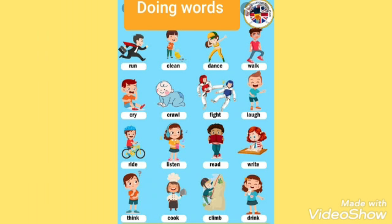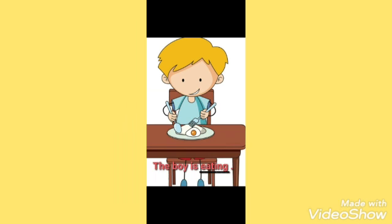Now let us see the words in the sentences that tell what a person, animal, or thing does. Let's move on to some more examples to understand better. What is this boy doing, children? Just watch this picture and tell me.